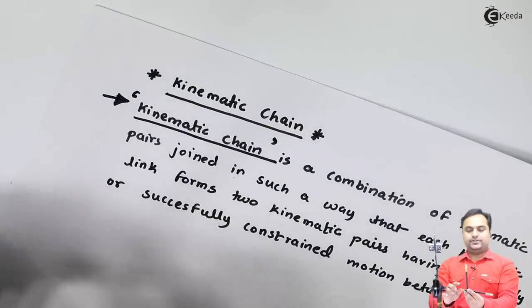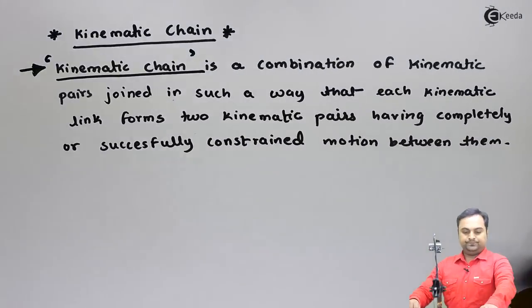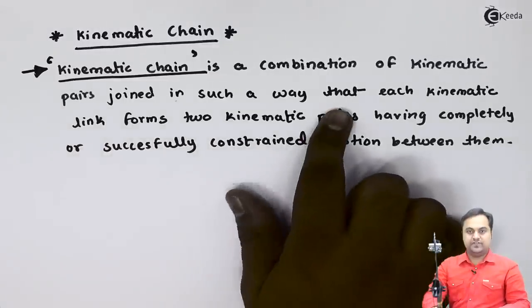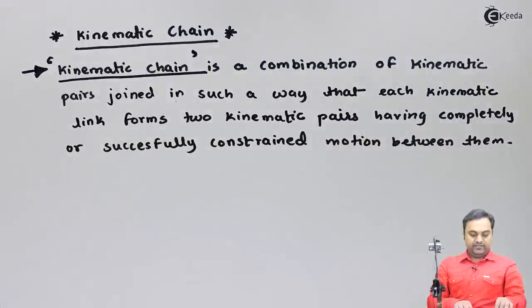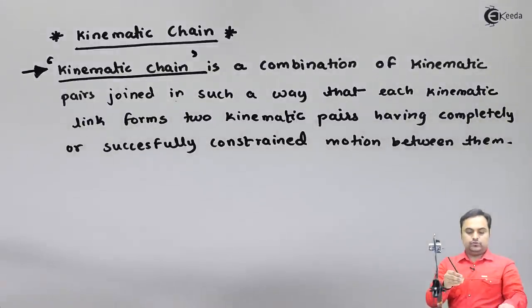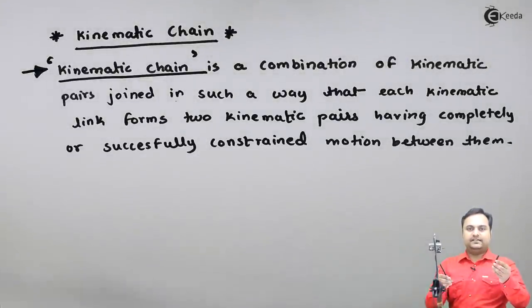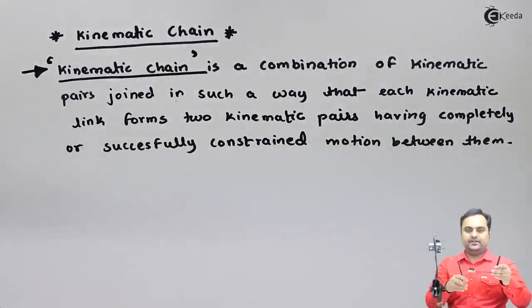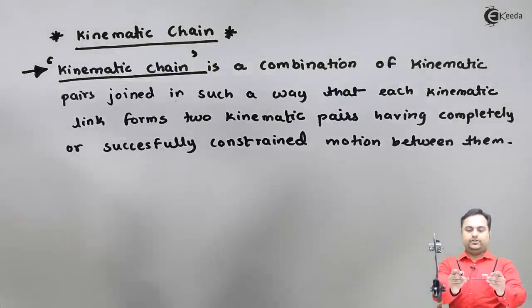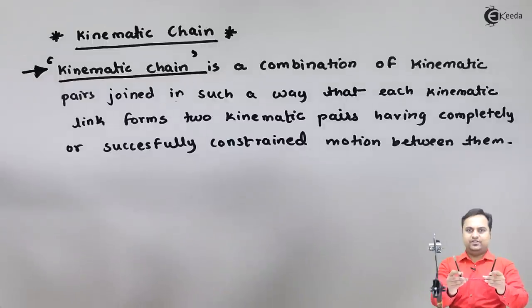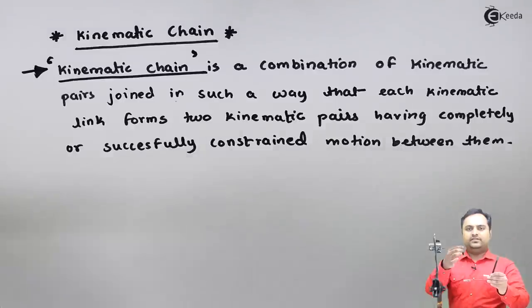In a kinematic chain, each kinematic link forms two kinematic pairs. For example, if I consider one pin as one kinematic link, it is connected to two other links forming two kinematic pairs. The pen in my left hand and the red pen form one kinematic pair. If I connect another link to the red pin, the red pin forms two kinematic pairs with the pens in my right and left hand.